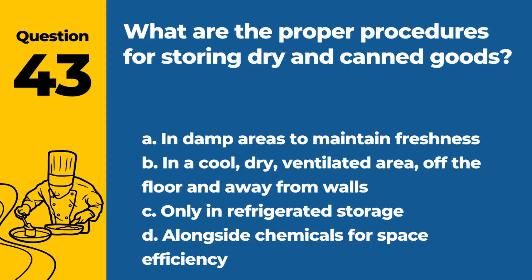Question 43. What are the proper procedures for storing dry and canned goods? A. In damp areas to maintain freshness. B. In a cool, dry, ventilated area, off the floor and away from walls. C. Only in refrigerated storage. D. Alongside chemicals for space efficiency. Answer: B. This method of storage helps prevent contamination and spoilage of dry and canned goods.